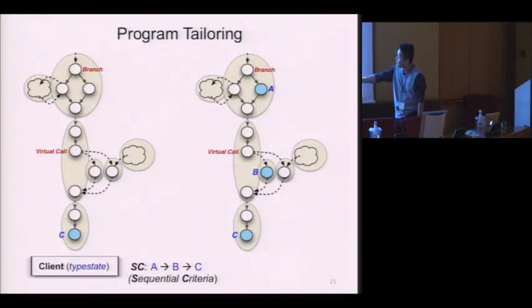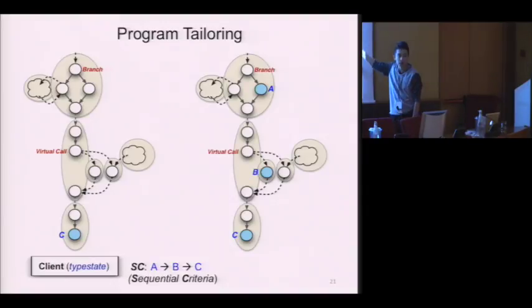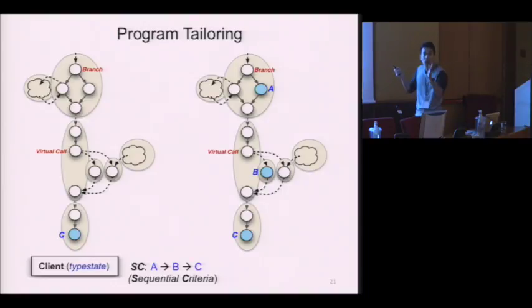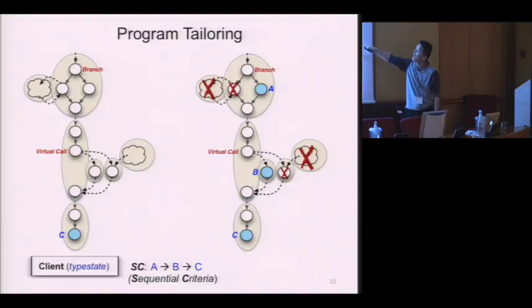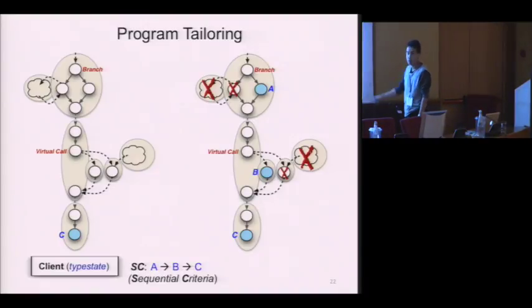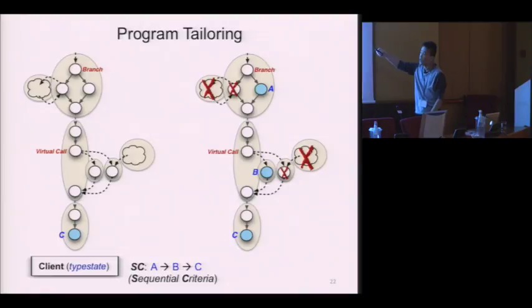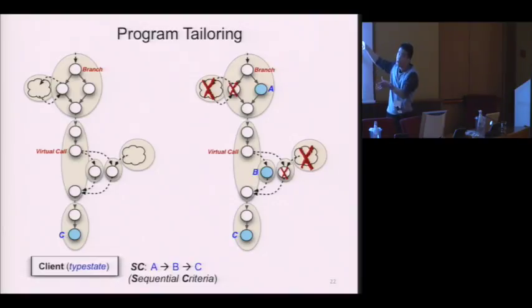However, for the same client, if the client not only generates the error statement but also generates temporal sequences leading to this error statement, then program tailoring would consider the whole temporal sequences as the sequential criteria — SC for short — to tailor a program. For example, if statement A in SC is in a branch, and statement B is in a method which is a target method at some virtual call site, program tailoring's job is to find all statements in the program that visit A, B, C in the given order. All statements reachable from other branches and virtual call sites could be removed.